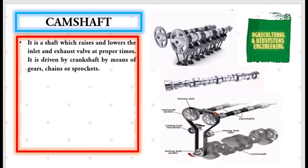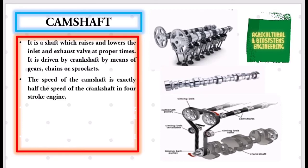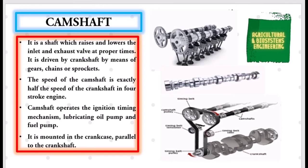Next, camshaft. It is a shaft which raises and lowers the inlet and exhaust valve at proper times. It is driven by crankshaft by means of gears, chains, or sprockets. The speed of the camshaft is exactly half the speed of the crankshaft in four-stroke engine. Camshaft operates the ignition timing mechanism, lubricating oil pump, and fuel pump. It is mounted in the crankcase parallel to the crankshaft.